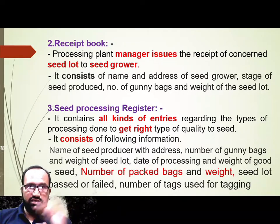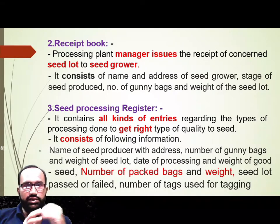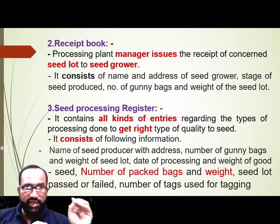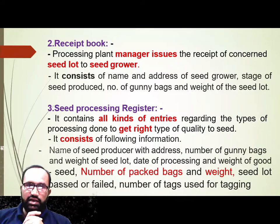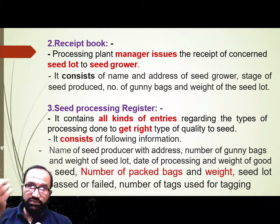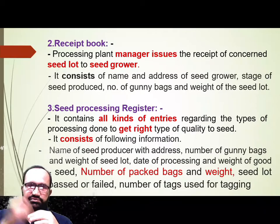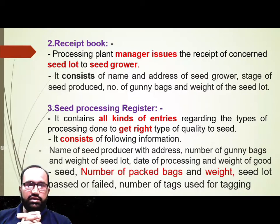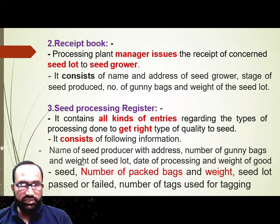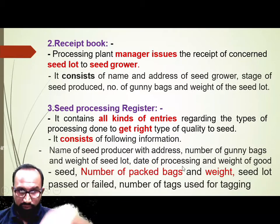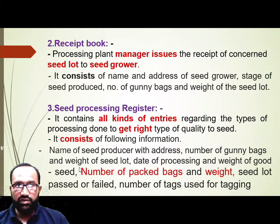Third is the Seed Processing Register. It contains all kinds of entries regarding the types of processing done to get the right type of quality seed. All kinds of entries related to the lot are noted here. It consists of the following information: name of seed producer with address, number of gunny bags and weight of seed lot, date of processing, and weight of good seed.